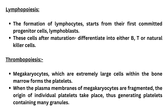The formation of lymphocytes, called lymphopoiesis, starts from their first committed progenitor cells — the lymphoblasts. These cells after maturation are able to differentiate into either B cells, T cells, or natural killer cells.